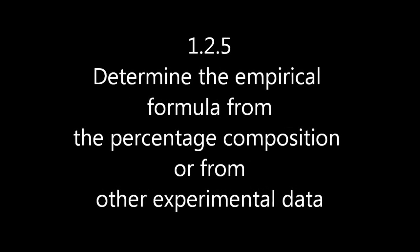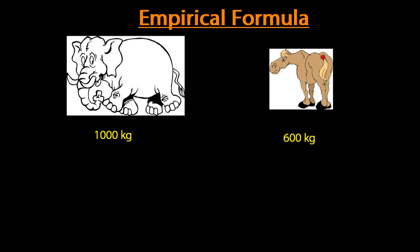Okay, so fast forward if you don't want the elephant and horse analogy, but that might help you. So the elephants are 1,000 kilograms and the horses are 600. And you have a box with elephants or horses in there.